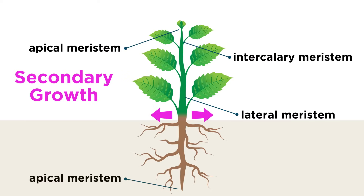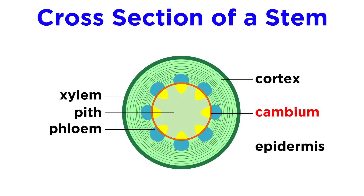Many plants can also grow in another way, called secondary growth. In secondary growth, the plant gets broader or thicker due to the lateral, or sideways, activity of meristem cells. These meristematic cells exist in the cambium, a special layer in between the xylem and the phloem in a plant's stem. When lateral meristem cells divide, they create more girth for the plant, so the stem increases in diameter.